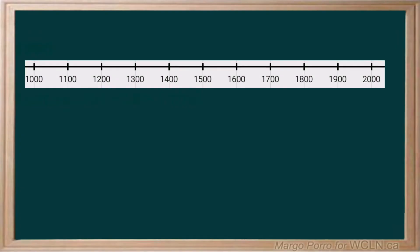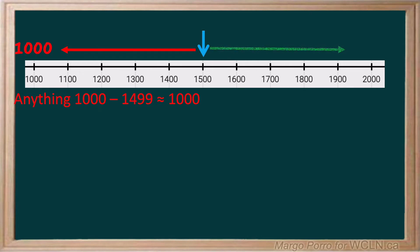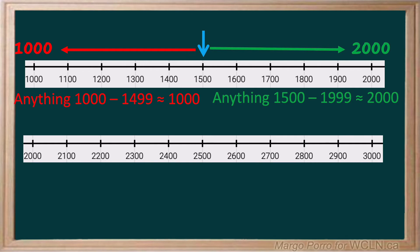On this number line, any number below the midway point of one thousand five hundred rounds down to one thousand. Any number at or above one thousand five hundred rounds up to two thousand. This pattern continues. On this number line, any number below the midway point of two thousand five hundred rounds down to two thousand. Anything at or above the midway point rounds up to three thousand.